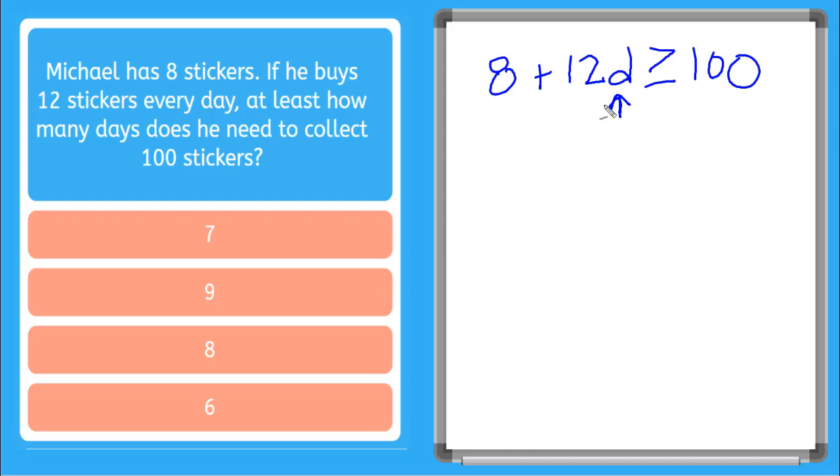So we're going to subtract 8 from both sides. So we go minus 8, minus 8 over here. So this gives us 12D is greater than or equal to 100 minus 8 is 92.